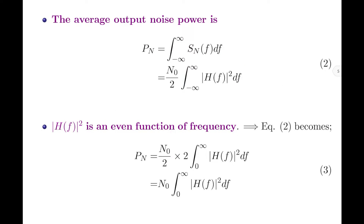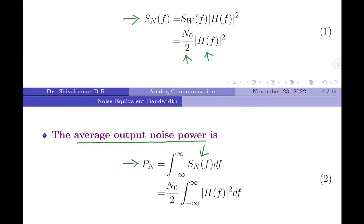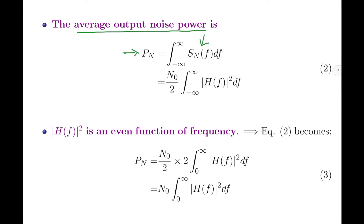Let us now find the average output noise power, denoted Pn, which equals the integral from minus infinity to plus infinity of SN(f) df. Substituting SN(f) from the previous equation, and taking N0/2 outside the integral since it is a constant, we get Pn = (N0/2) · ∫_{-∞}^{+∞} |H(f)|² df.